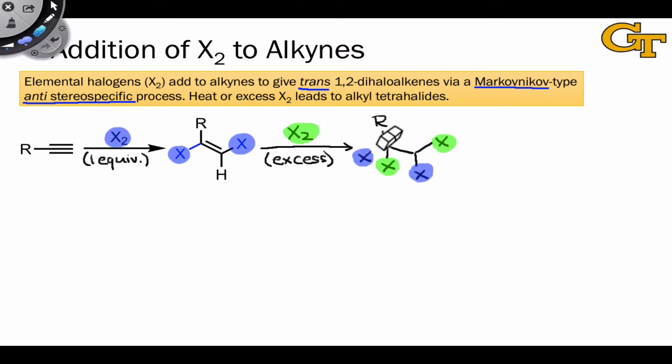Because each addition occurs with anti-stereo-specificity, we can even do this in such a way that we end up with a particular diastereomer of product. For example, we can imagine if this X atom adds from above the alkyne, that means that the other blue X atom must add from below, resulting in a product in which the blue X atoms are anti to each other and the green X atoms are anti to each other as they must be since this reaction is anti-stereo-specific.